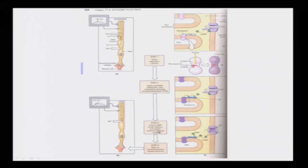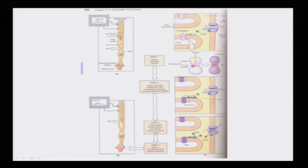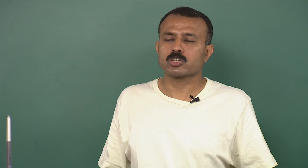The cyclic GMP level declines and the gated sodium channels close. Step three is very important: phosphodiesterase binds and removes the cyclic GMP which was holding the sodium channel open. Once the light falls, the cyclic GMP is removed from the binding site by phosphodiesterase, the channel closes, the current flow through the sodium channel stops, and this is how signal transduction by light takes place.